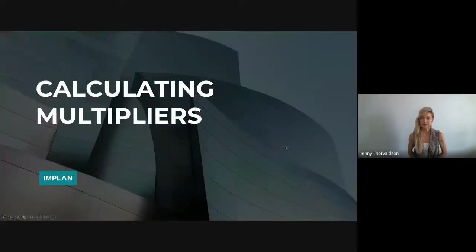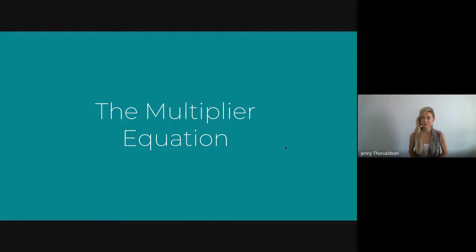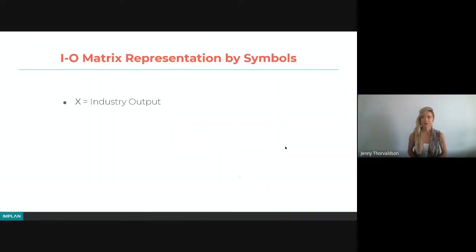We're going to calculate multipliers today, so we have to start by discussing the multiplier equation. And to start doing that, we're going to first define a few matrices and the symbols that we use to represent those matrices. The first thing we're going to talk about is the matrix of industry outputs, so we'll call that X, and that's actually going to be a vector, which is basically one column or one row. We just have the output values of all the industries in a region in that vector matrix.